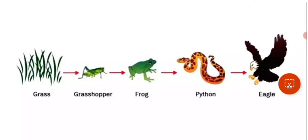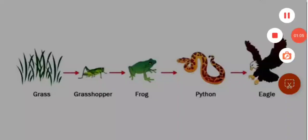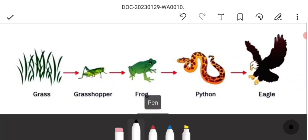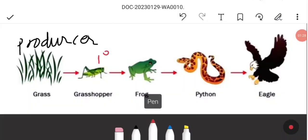That is a food chain. Food chain is always begun by the producer. This is the producer. The grasshopper is the primary consumer, frog is the secondary consumer, python is the tertiary consumer, and this is the quaternary consumer.